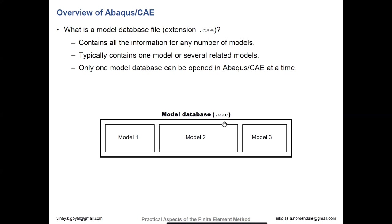All the models you create will be within that CAE file. You can duplicate and copy models — useful if you want to do model sensitivity studies without messing with a given model. However, this is not going to copy all of the necessary input files and any post-processing files like the DAT file or message file — those are separate files.